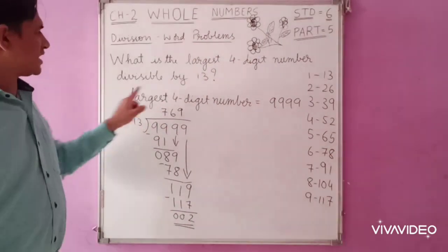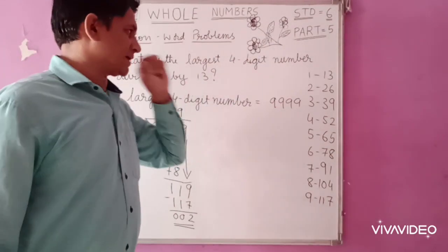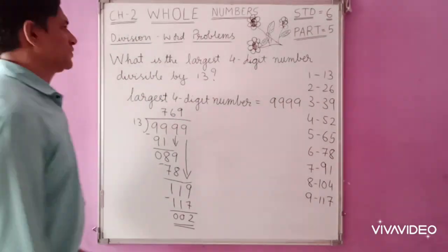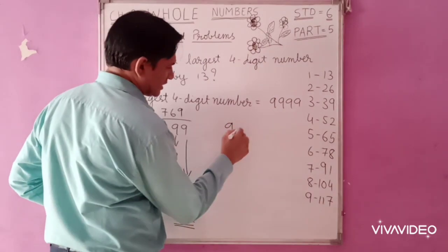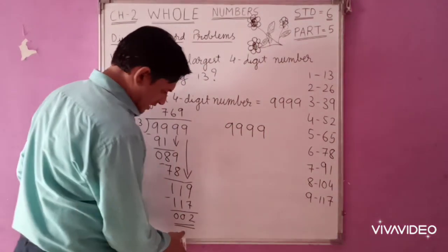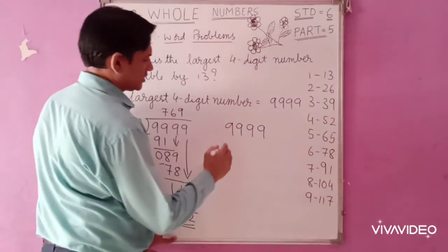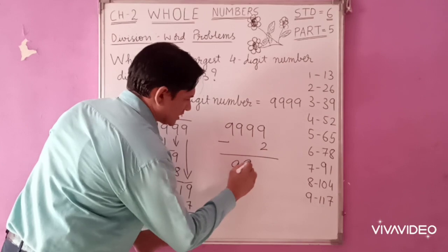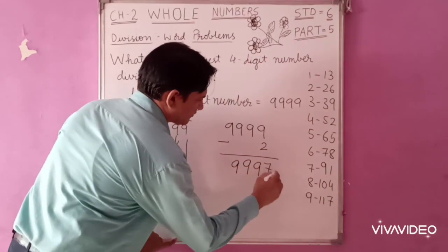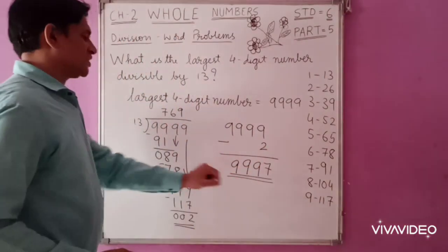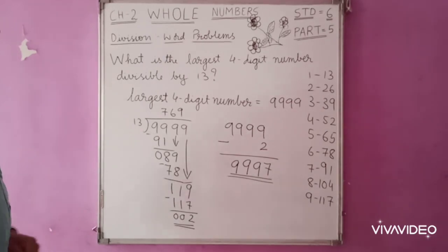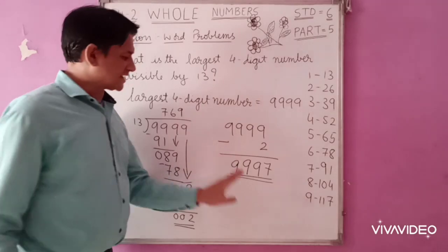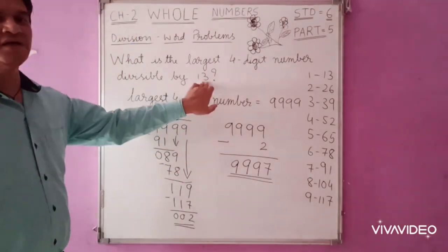Now you want the largest 4-digit number which is divisible by 13. So what you have to do: take 9999 and subtract this remainder of 2. It is 9,997. So 9,997 is the largest number which is exactly divisible by 13.